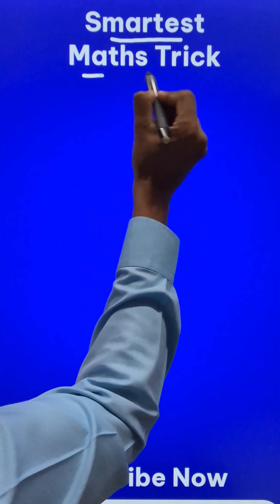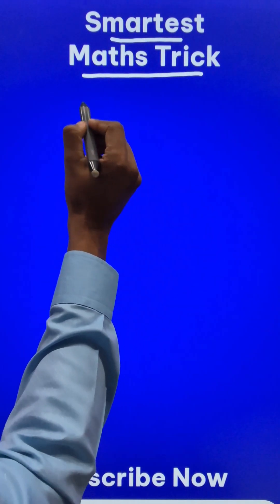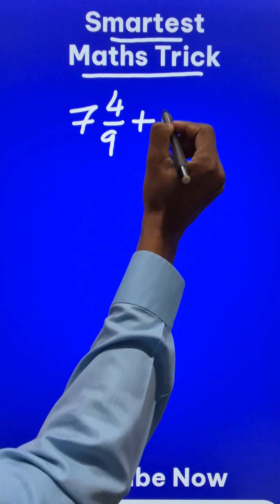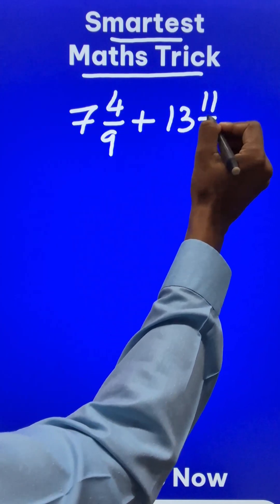Here is the smartest mathematics trick to add mixed numbers. Like you have 7 4/9 and you have to add 13 11/12 to that.